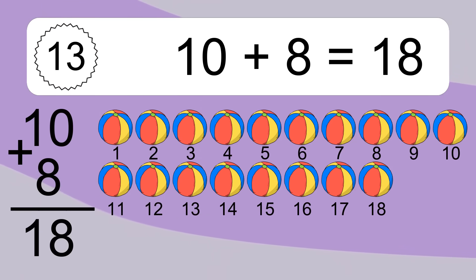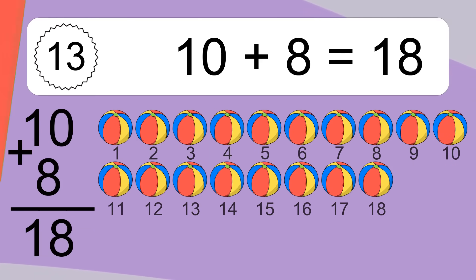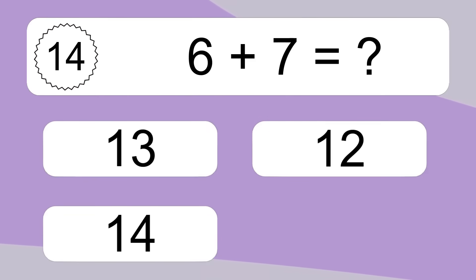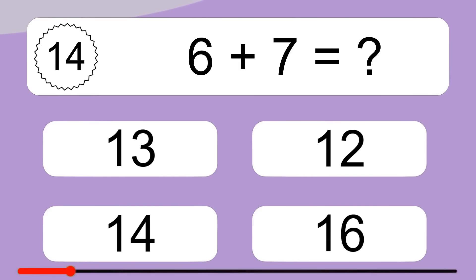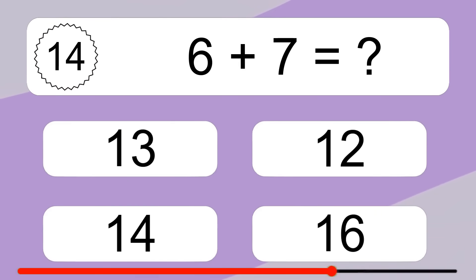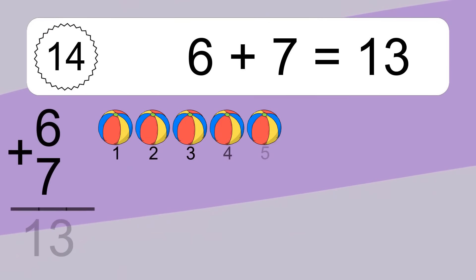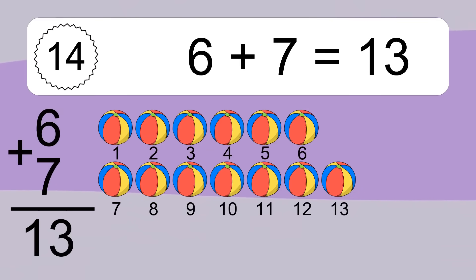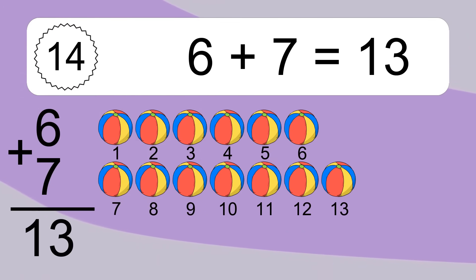7, 8, 9, 10, 11, 12, 13, 14, 15, 16, 17, 18. 6 plus 7 equals what? 6 plus 7 equals 13. Let's count it: 1, 2, 3, 4, 5, 6, 7, 8, 9, 10, 11, 12.